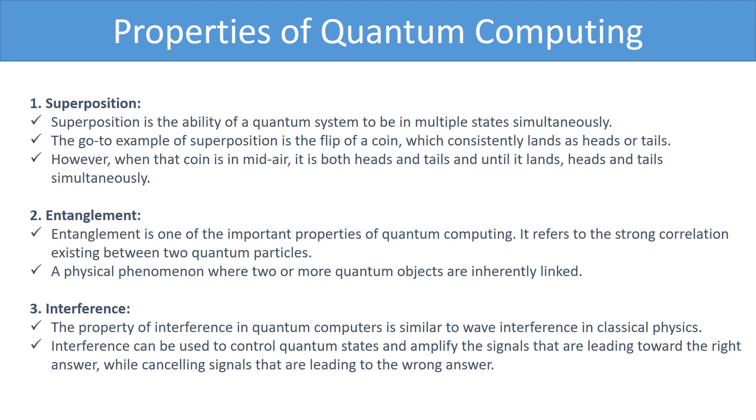when that coin is in mid air, it has both heads and tails and until it lands, heads and tails simultaneously. Secondly, before measurement, the electron exists in quantum superposition.